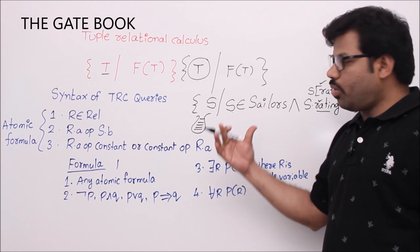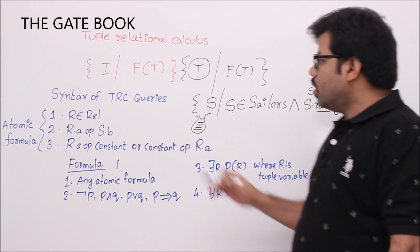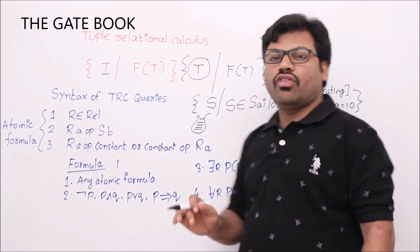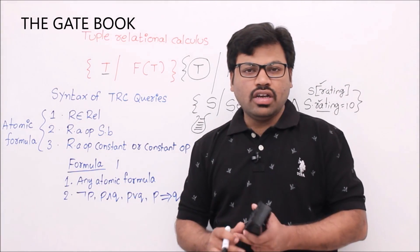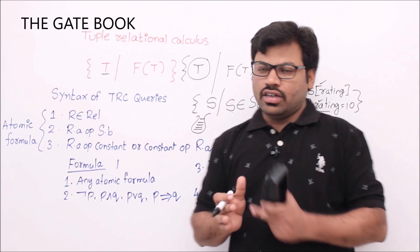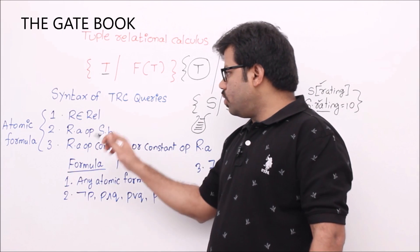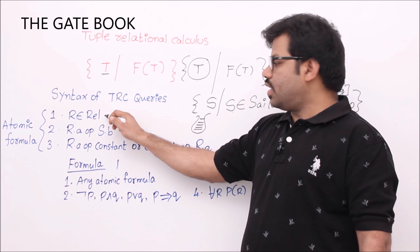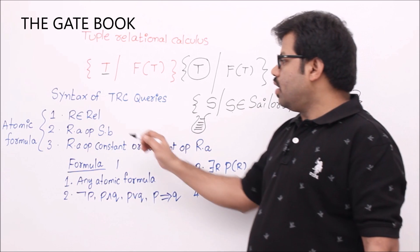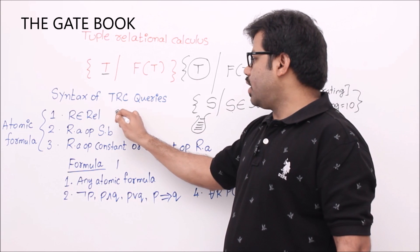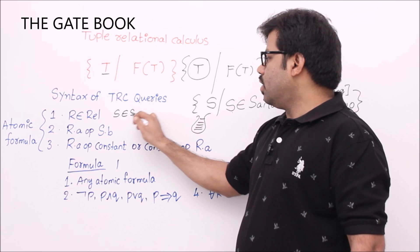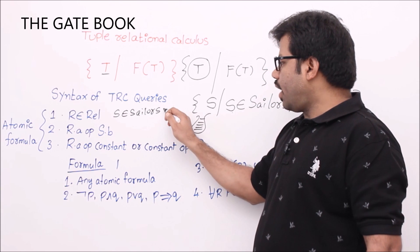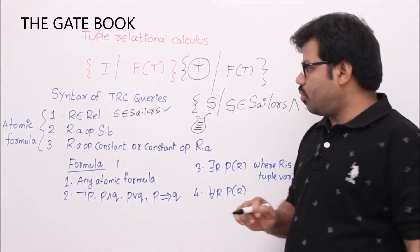Now we will see the formal definition of a formula. We are going to use three atomic formulas first. An atomic formula is one which cannot be further divided. The first basic formula is R belongs to a relation, where relation is nothing but a table. Example: S belongs to sailors — written like this. This is an atomic formula.